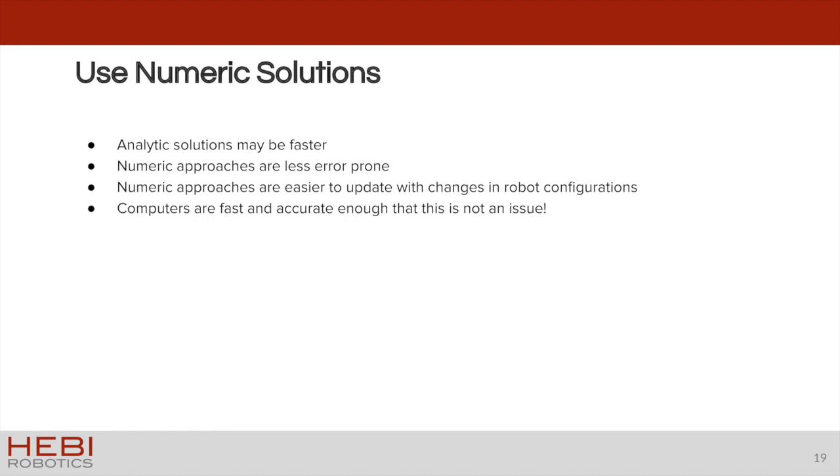Once you derive such an expression, you cannot easily modify this expression to add a link in the middle of your robot, for example. So instead, we recommend generating and evaluating each individual transform and just multiplying these computed matrices together.